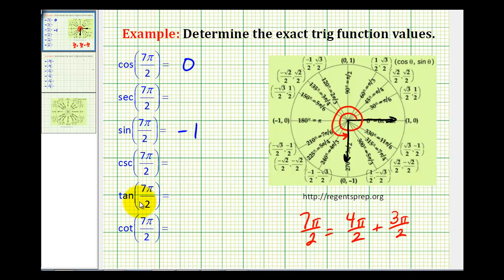We also know that tangent theta equals y divided by x. So tangent equals -1 divided by 0, which is undefined. Therefore, the tangent function value does not exist.